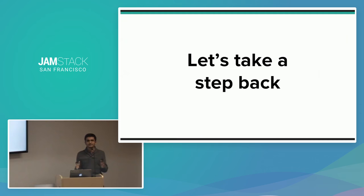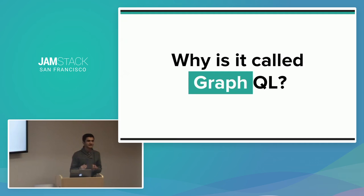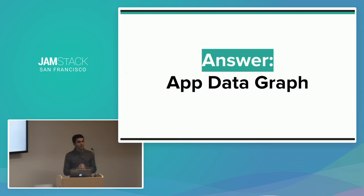Why is it called GraphQL? When I was first introduced to it, I thought it came out of Facebook and seemed meant for graph databases or social networks. After getting into it, you realize that's far from the truth. The graph it operates on is the application data graph. When you write web or mobile applications, you're operating on a set of objects connected in various ways — and these objects and their relationships form the app data graph.